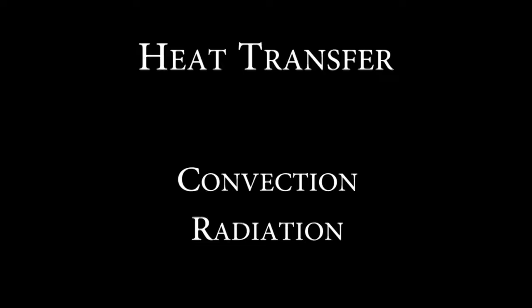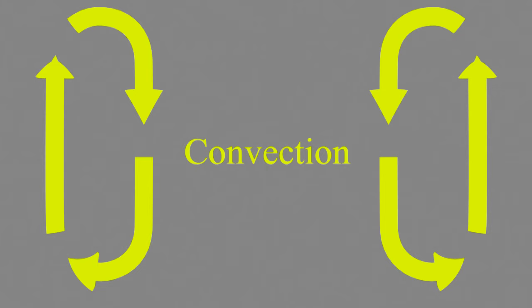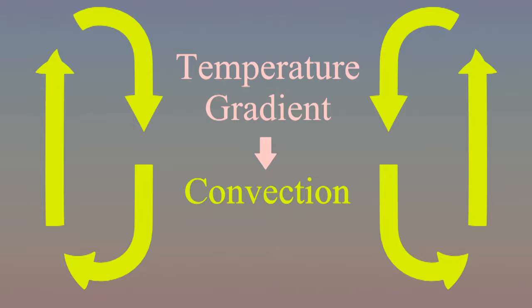The sun uses convection or radiation. Convection happens whenever there's a strong temperature gradient. Let me show you why. Imagine a star with hot gas on the bottom and cold gas on top and high pressure on the bottom and low pressure on top. Let's consider two different scenarios. First, a slight change in temperature and then a strong change.